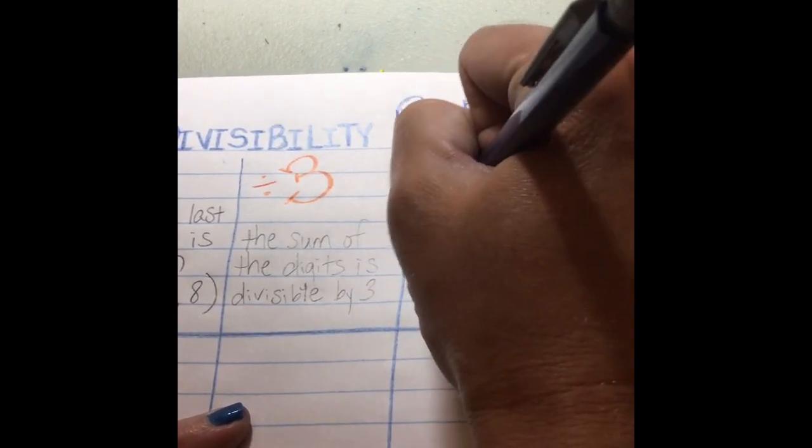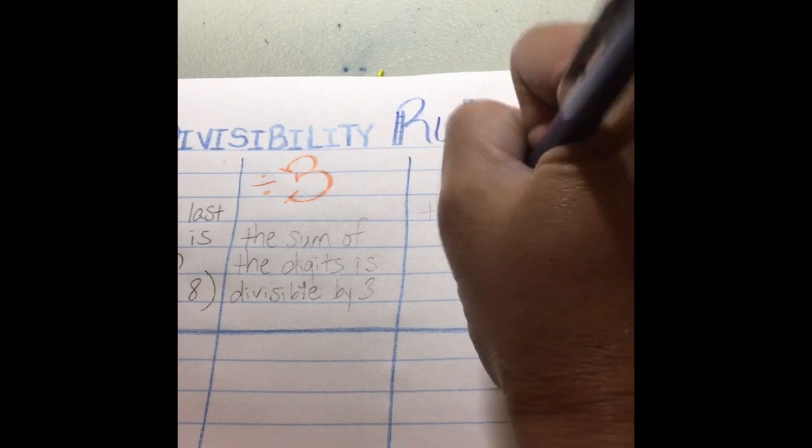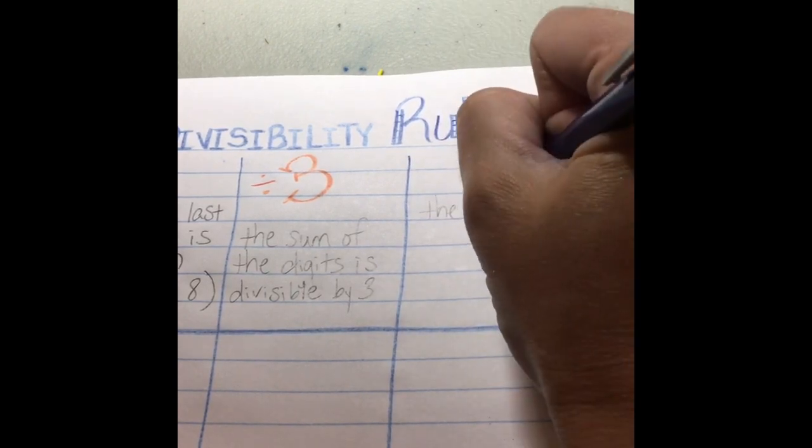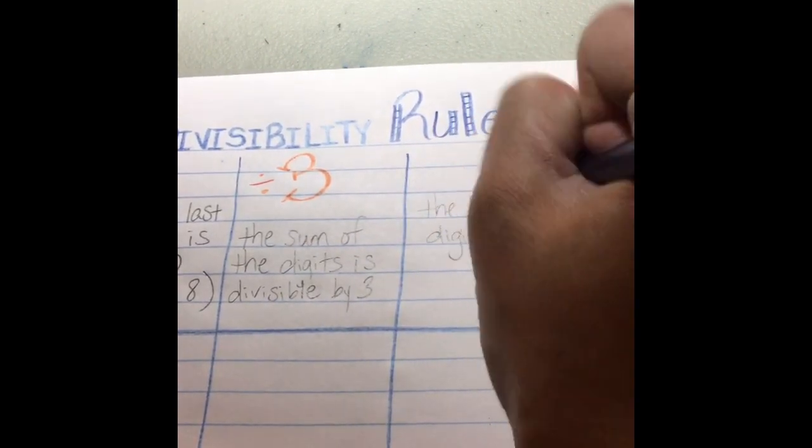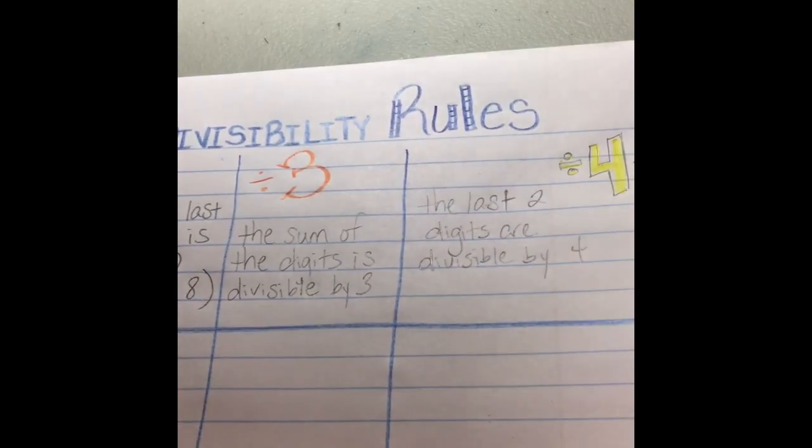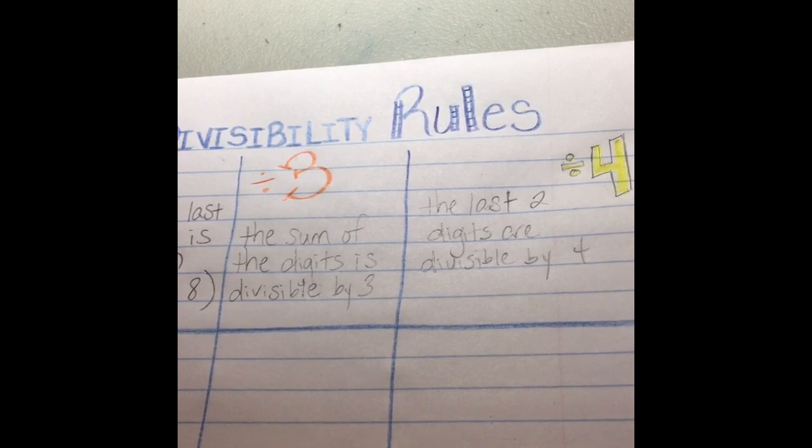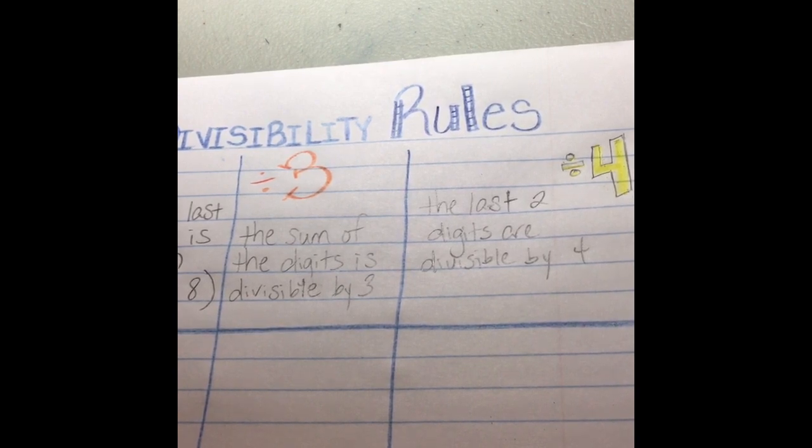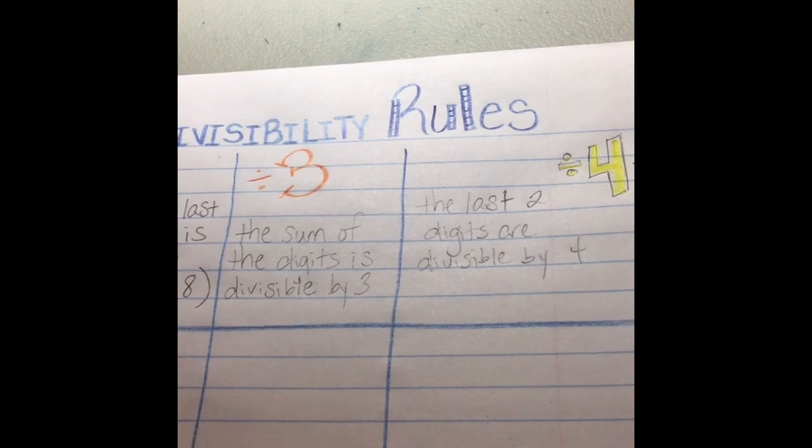A number is divisible by four if the last two digits are divisible by four. So, let's see, like 140. 40 is divisible by four, so 140 is divisible by four. 216, 16 is divisible by four, so 216 is divisible by four.